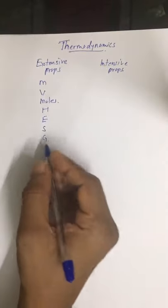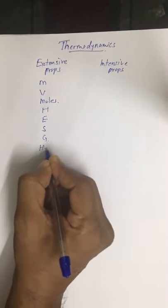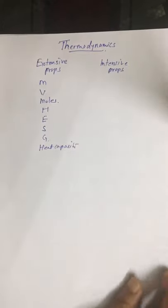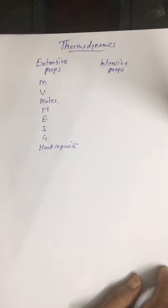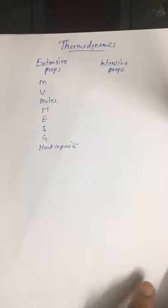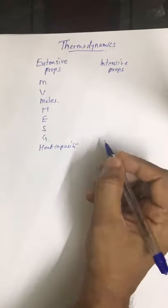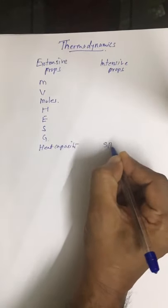We can also say heat capacity is an extensive property — it is the amount of heat required to raise the temperature of a system by one degree. When we say 'system' we are not specifying how much mass. Intensive properties, on the other hand, are mass independent.